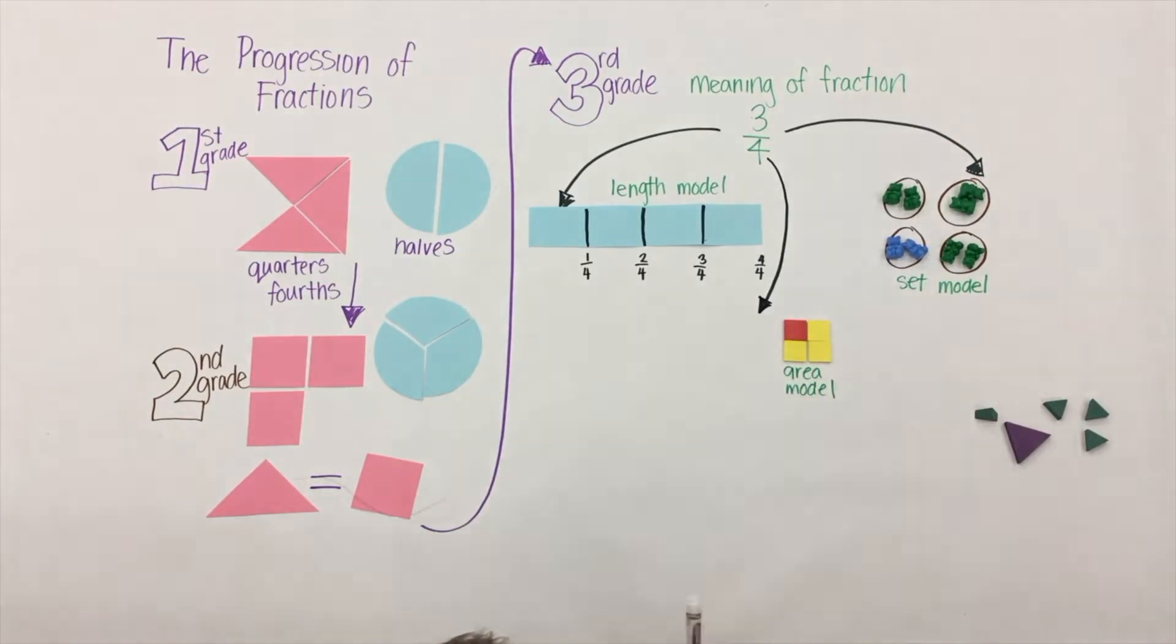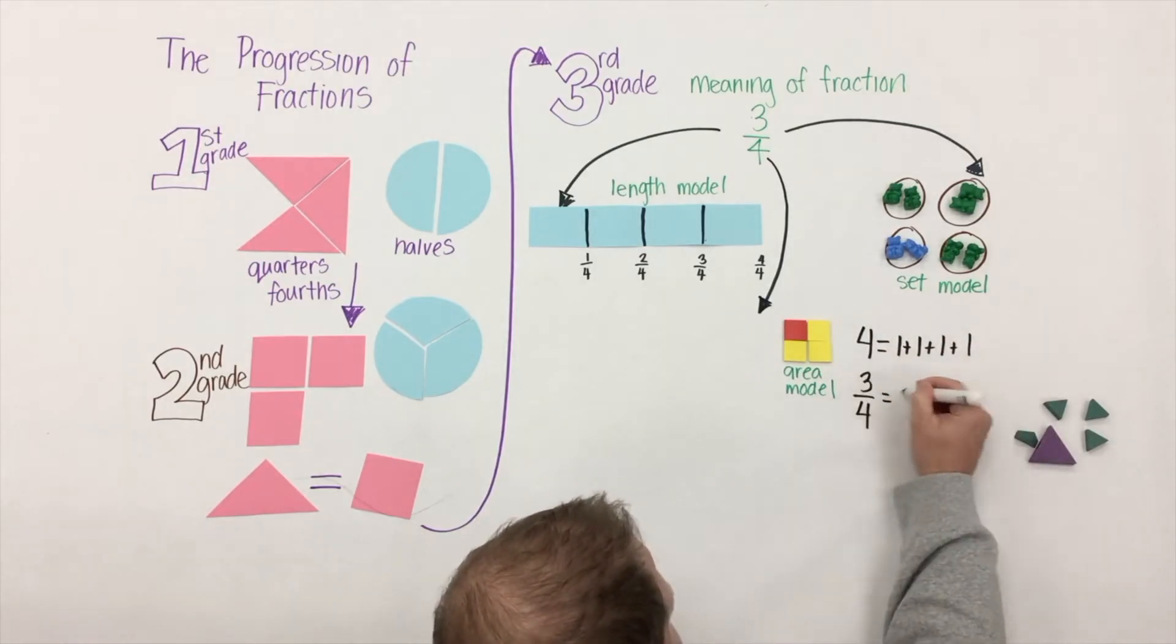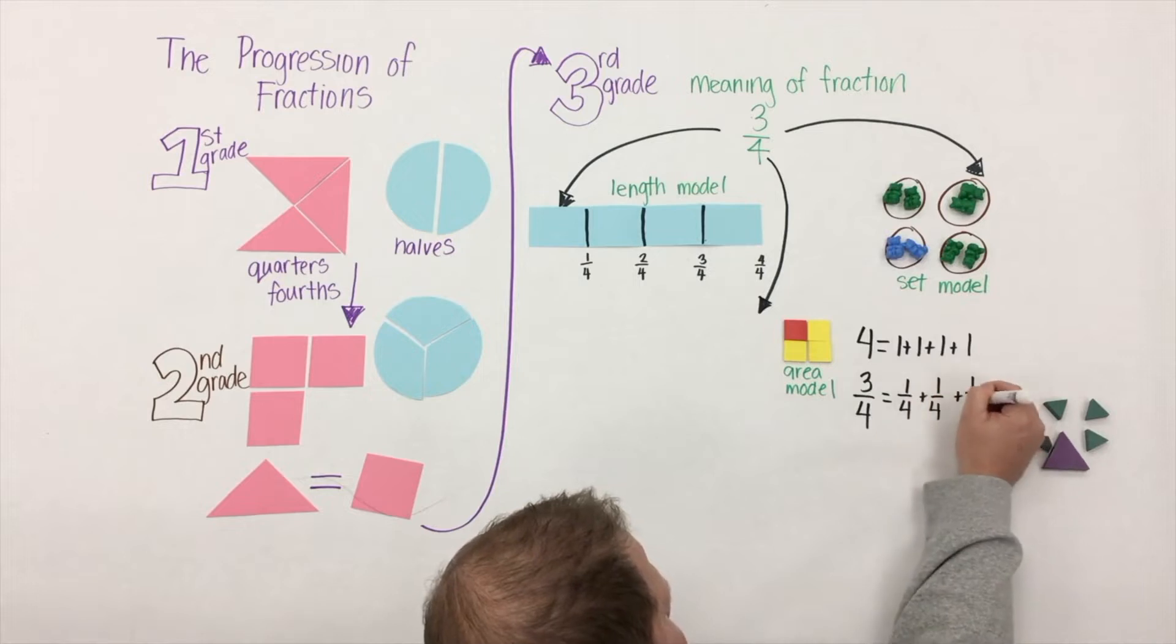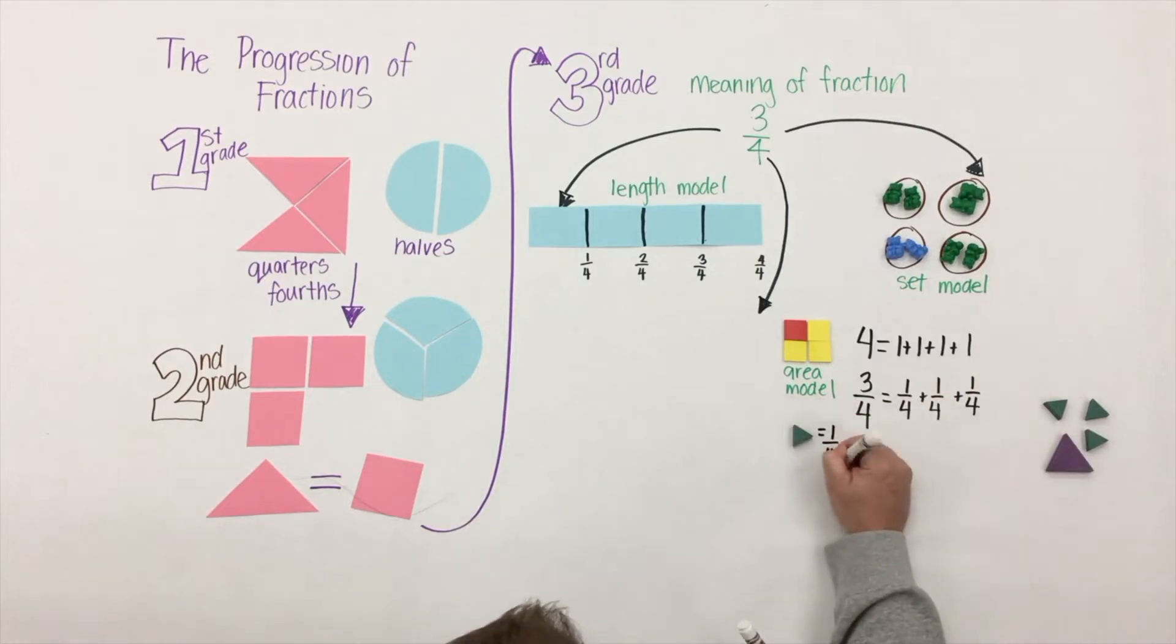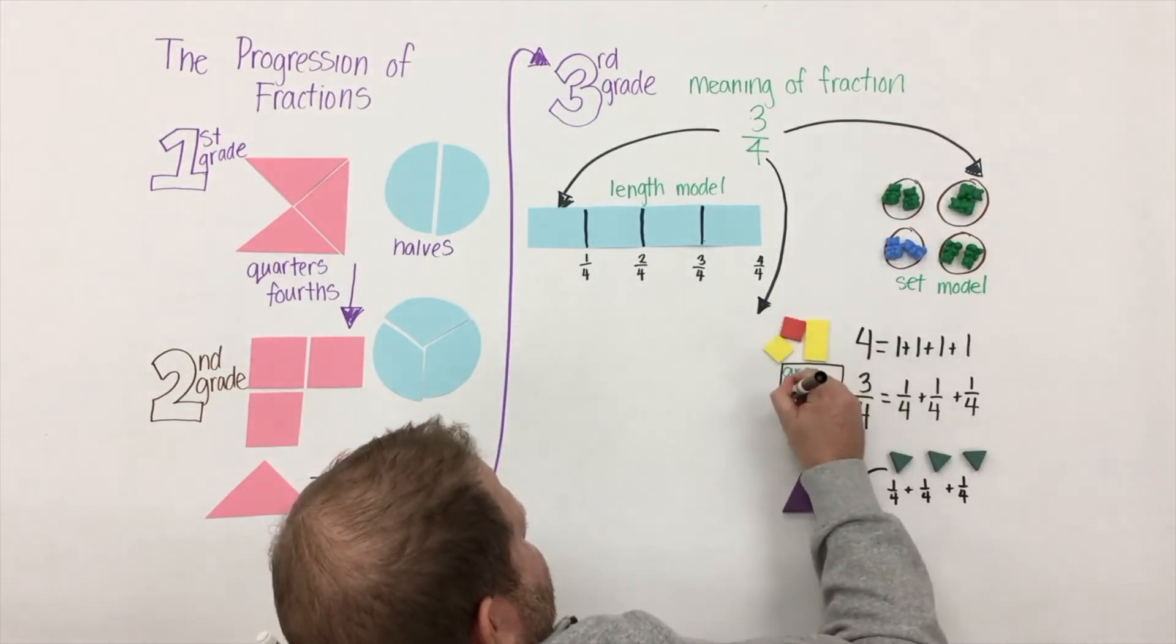As students are building this understanding, we need to make a connection back to their understanding of what they have with whole numbers. So just as whole numbers - take for example this number four is built from units of one - fractions, in this case three-fourths, is built from three one-fourths: a fourth plus a fourth plus a fourth. Big understanding here.